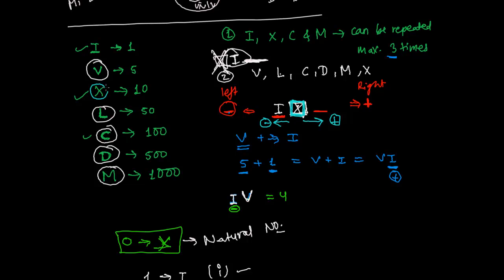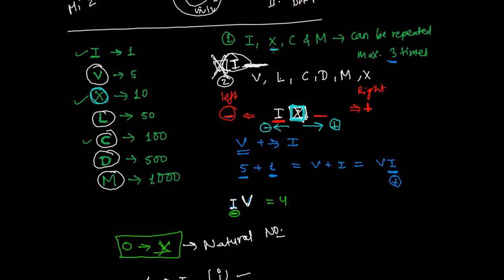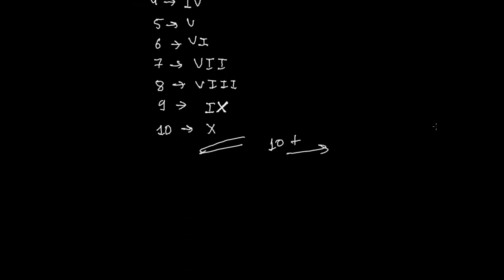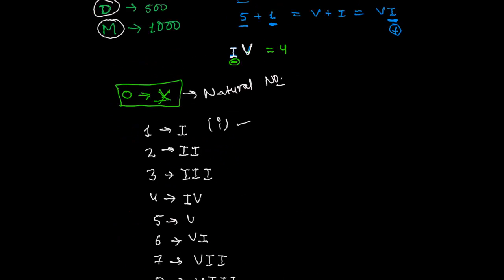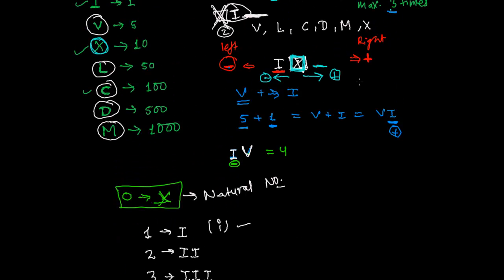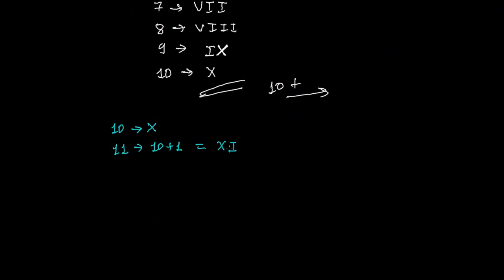We're going to write numbers above 10. We know that 10 is represented by X. One more important rule: X can be repeated a maximum of three times. For 10, I write X. For 11, which is 10 plus 1, I write the 1 to the right side after X, since writing to the right means adding. So XI represents 11.